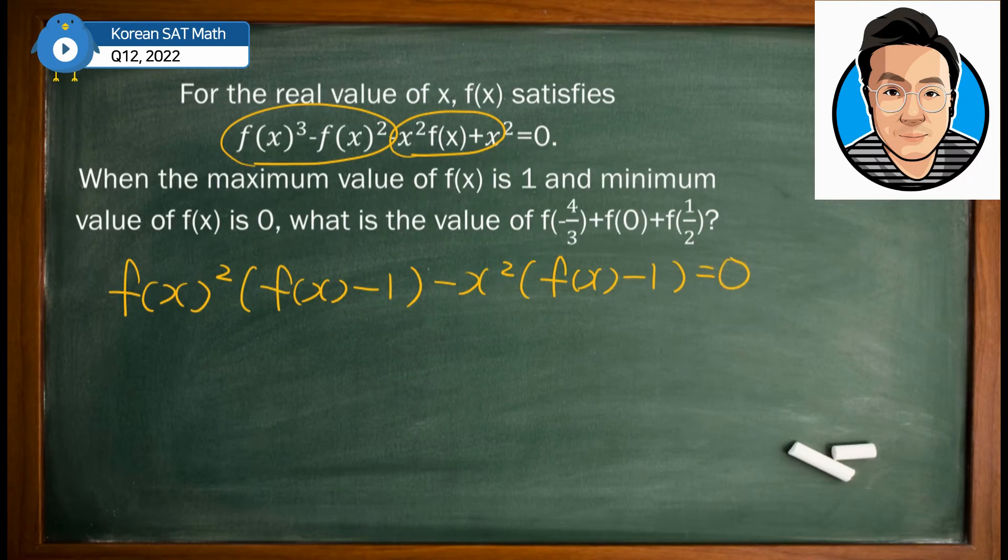For these two terms, we have the common term as f(x) - 1, so we can pull that out. Then we can rewrite your equation as, I'll be using the bracket right here.